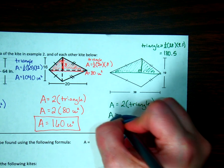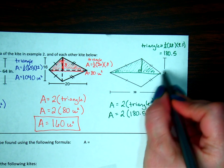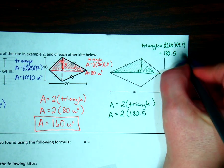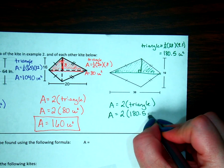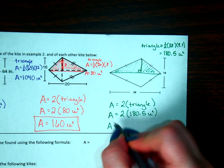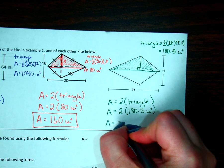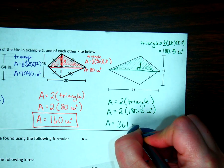So then my total area is going to be 2 of those triangles. What are these? They don't have any units, so it's just square units. So my total area then, when I multiply 180.5 times 2, it's going to be 361 square units.